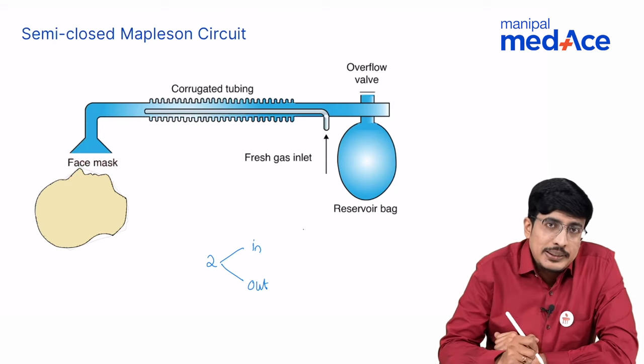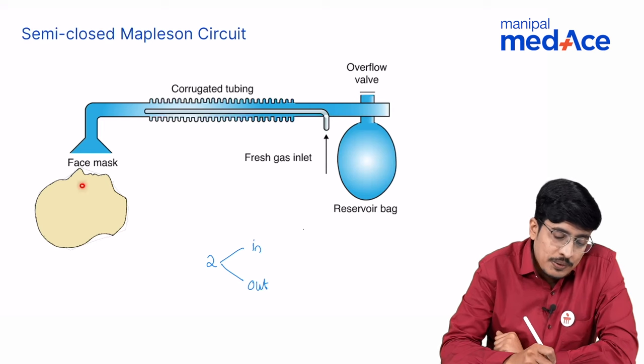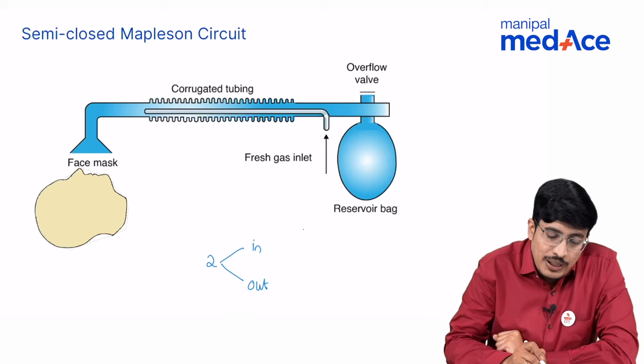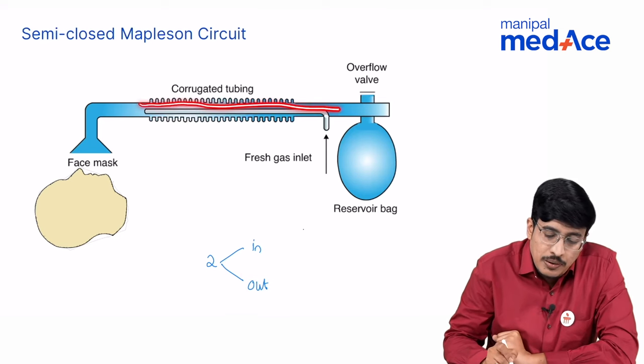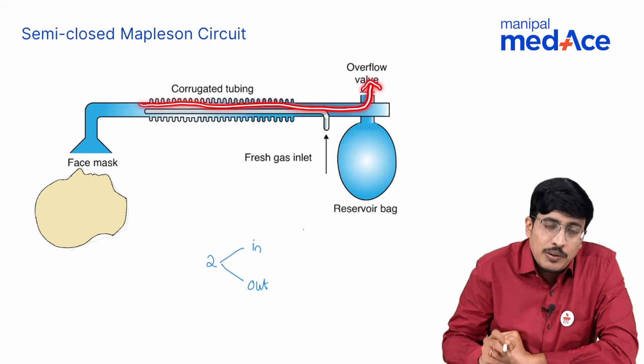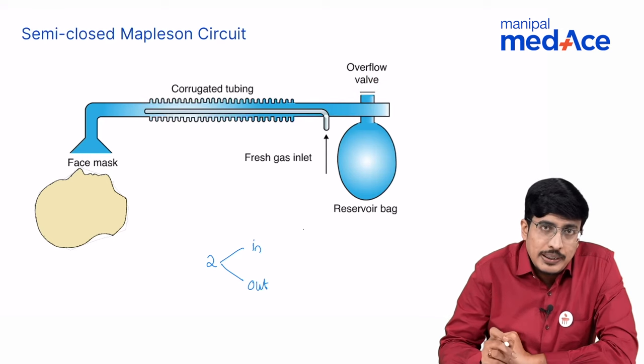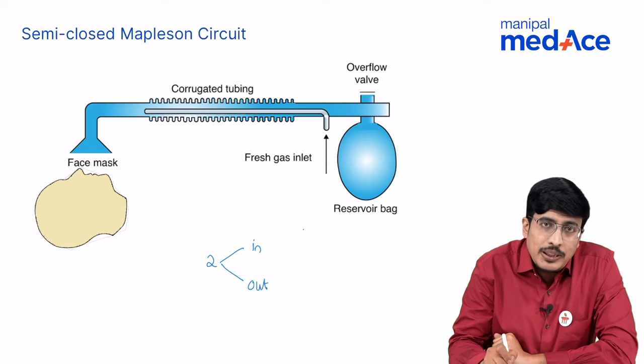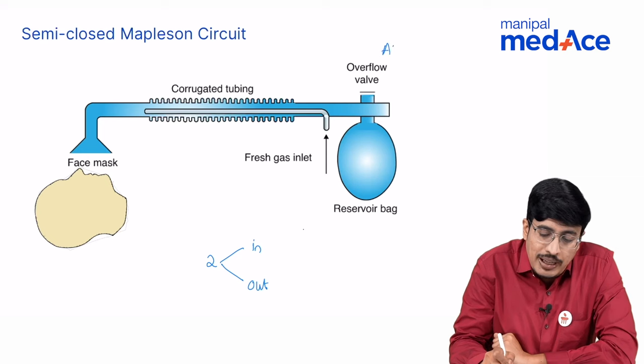Once the patient breathes and exhales the gas it would go out and get collected in this outer corrugated tubing from where it will go to the outflow valve to get excreted. The outflow valve is an adjustable valve. You can adjust the pressure by rotating a knob. It is called as the APL valve.